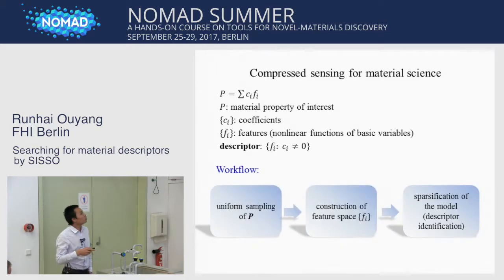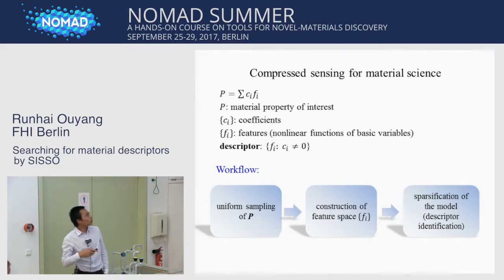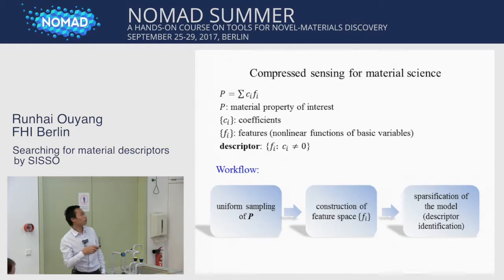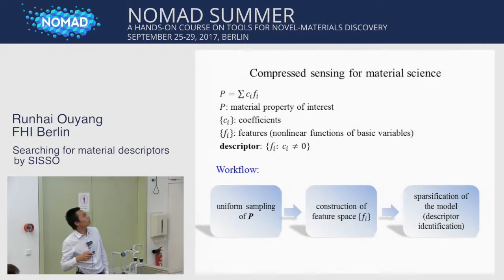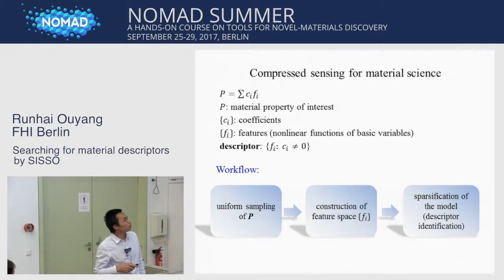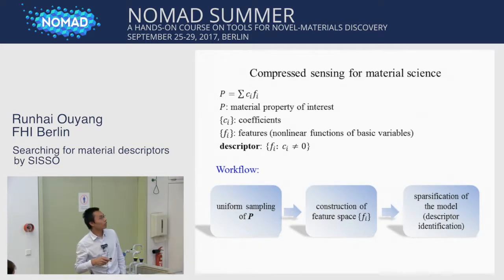Here is the workflow. First, we perform uniform sampling of the signal for the material property P in the whole material space. Then we construct a feature space for the specification of property P, and then we do the specification of the linear model, or the descriptor identification.